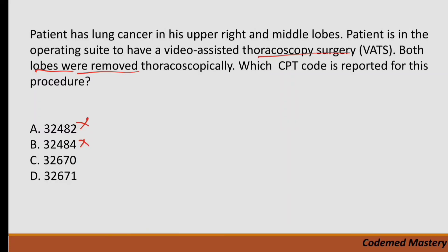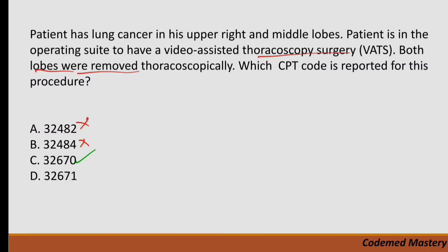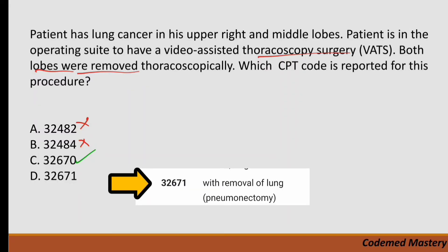Option C is 32670 — thoracoscopy surgical with removal of two lobes, bilobectomy. The question involves thoracoscopy surgery with removal of two lobes, so 32670 is our correct answer. Option D is 32671 — removal of lung, pneumonectomy — but in our case they performed removal of two lobes (bilobectomy), not pneumonectomy. So we eliminate option D and confirm option C: 32670.